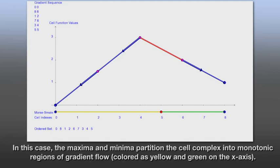In this case, the maxima and minima partition the cell complex into monotonic regions of gradient flow, colored as yellow and green on the x-axis.